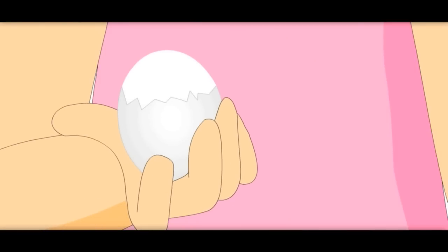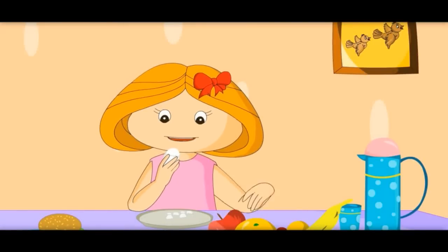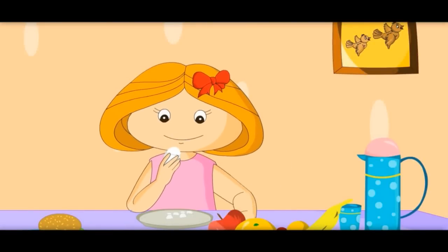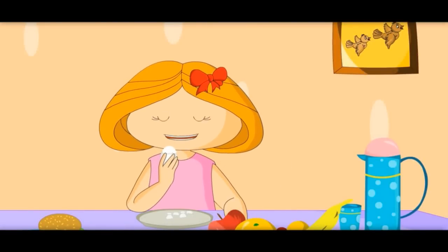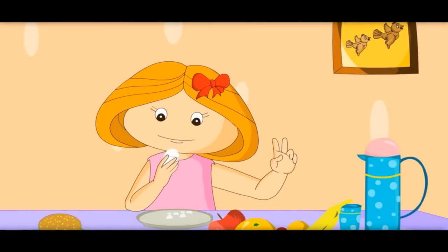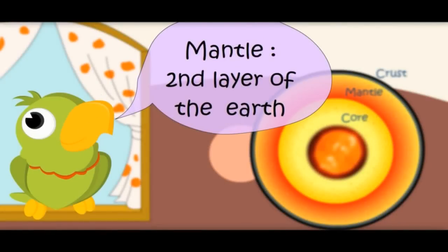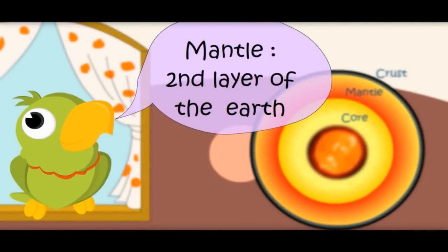This is the second layer of the egg. In Earth also, there is a second layer. What is it called? It is called the mantle. Mantle — the second layer of the Earth.